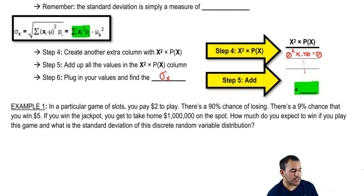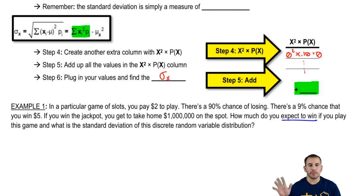In a particular game of slots, you pay $2 to play. There's a 90% chance of losing. There's a 9% chance that you win $5. And, you win the jackpot, you take home a million dollars on the spot. So, how much do you expect to win? Expecting to win is basically, here's some probabilities, right? So, here's some possibilities. There are corresponding probabilities. Now, what do you expect to win if you played this game? That's basically saying, find the mean.